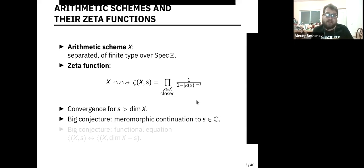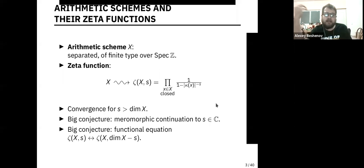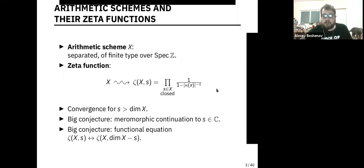What is not known — but this is a big conjecture in general — is that this zeta function defined by the Euler product actually admits an analytic continuation to the whole complex plane. Whenever we will be talking about the values of this function, we will always assume this meromorphic continuation conjecture. Another big conjecture, also not known in this big generality, is that there is a functional equation that somehow relates the value at S with the value at the dimension of the scheme minus S. By dimension, I will always mean the Krull dimension of the scheme.